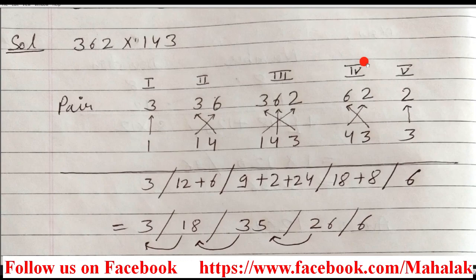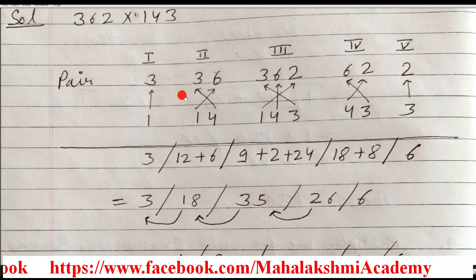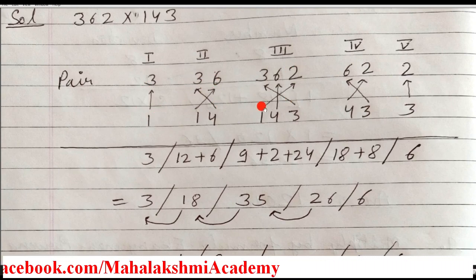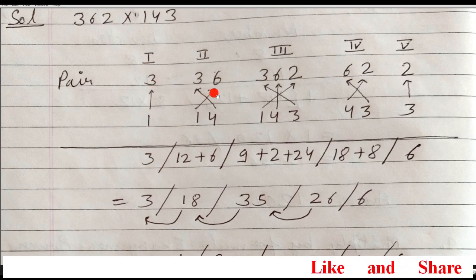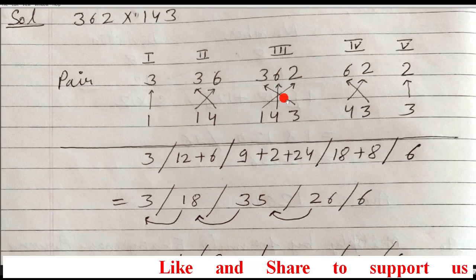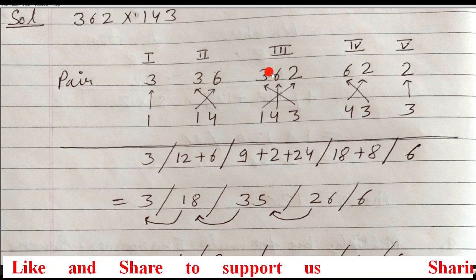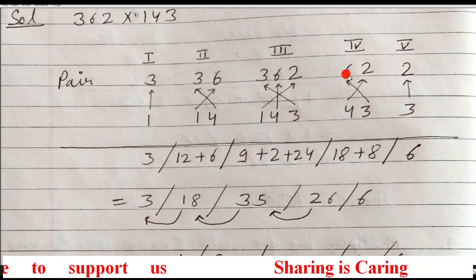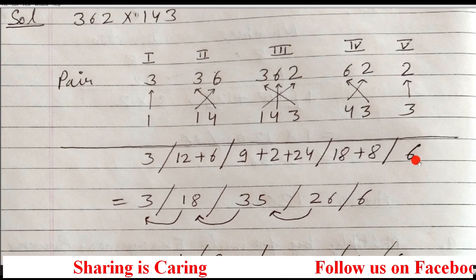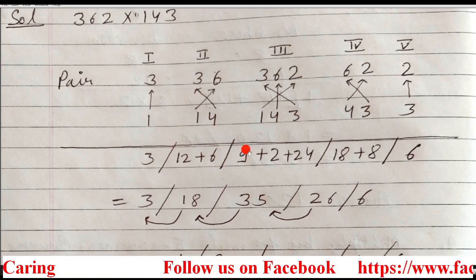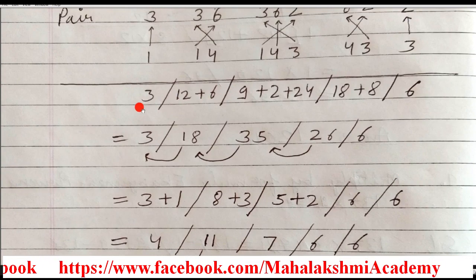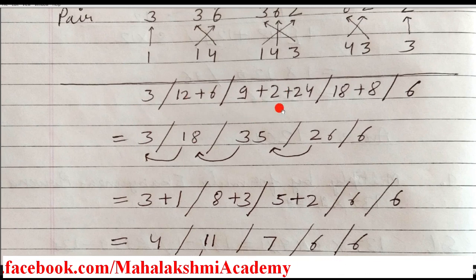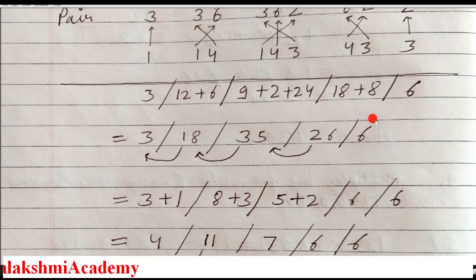Put arrows between the pairs: straight arrows and cross arrows. Along the arrows, multiply: 3×1 is 3; 3×4 plus 6×1 is 12 plus 6; then 3×3 plus 6×4 plus 2×1 is 9 plus 24 plus 2; then 6×3 plus 2×4 is 18 plus 8; and 2×3 is 6. Put long slashes to separate the sections. Now add them: you get 3, 18, 35, 26, 6 in the sections.